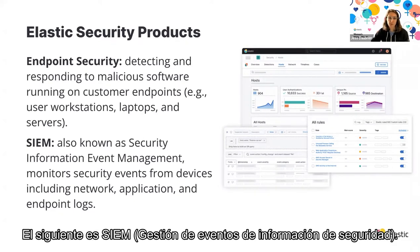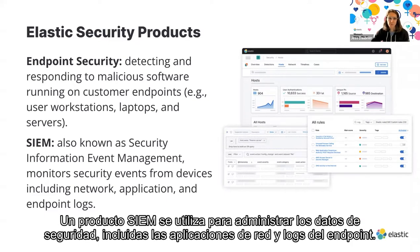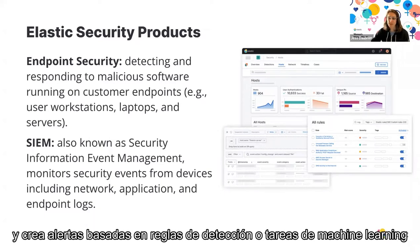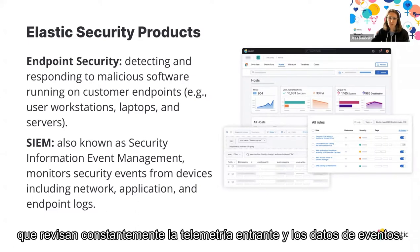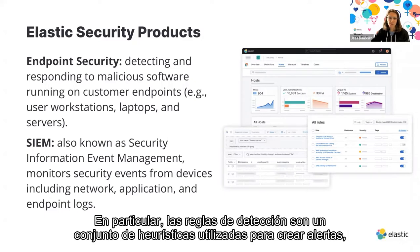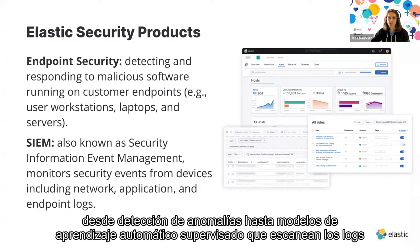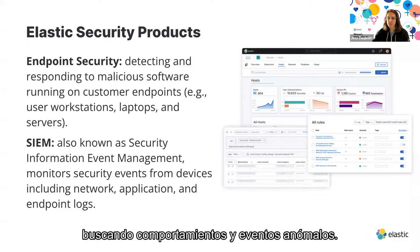The second product is SIEM, or Security Information and Event Management. A SIEM product is used to manage security data including network, application, and endpoint logs. One of its core features is monitoring security events and creating alerts based on detection rules or machine learning jobs that sift through incoming telemetry. Detection rules are heuristics used to create alerts, whereas ML jobs can include anomaly detection or supervised machine learning models scanning logs for anomalous user behavior.